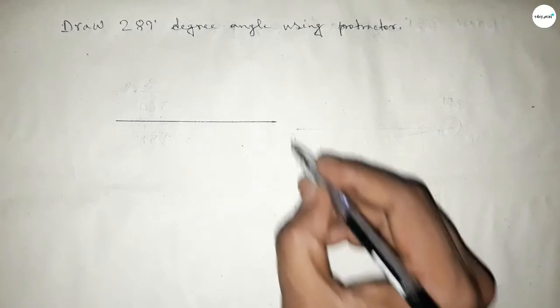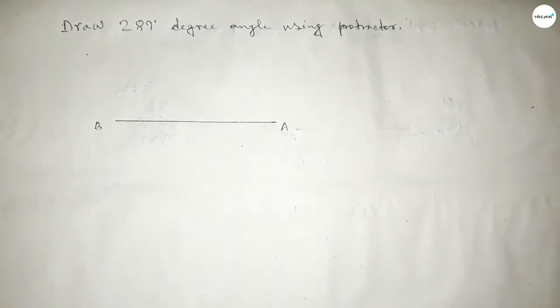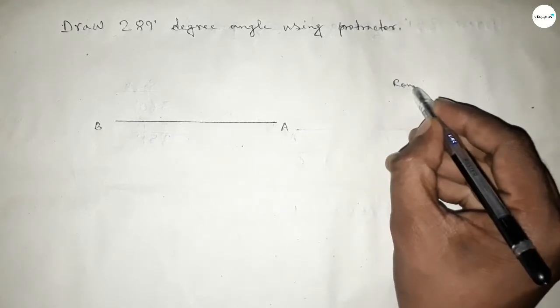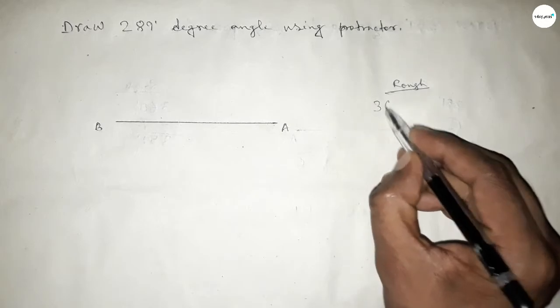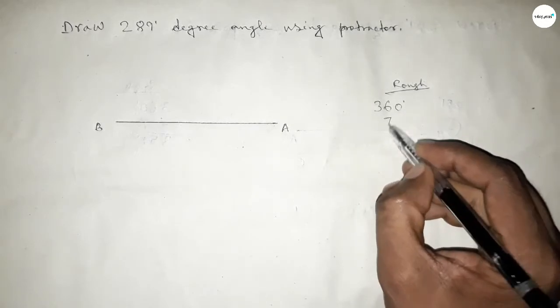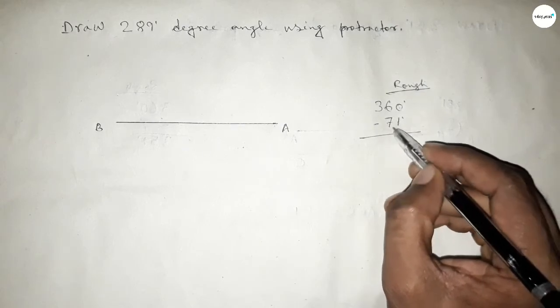Next, taking this end as point A and here point B. Now roughly discussing some important calculation here. If we subtract 71 degree angle from 360 degrees, then we can get 289 degree angle.